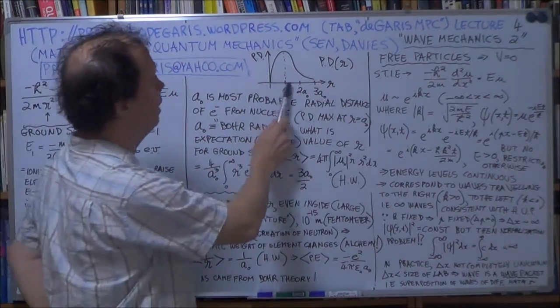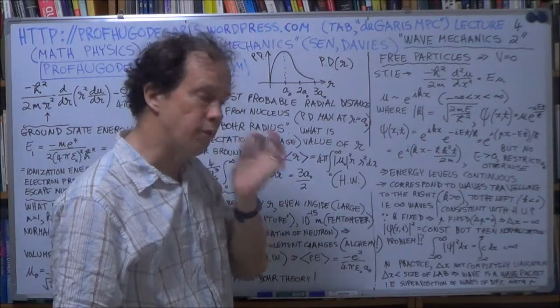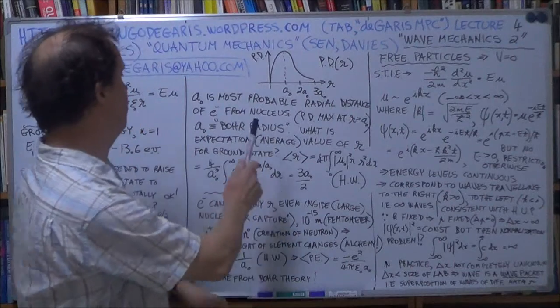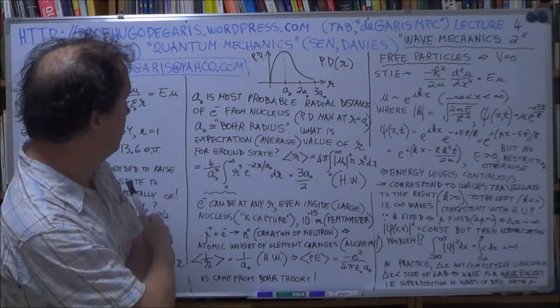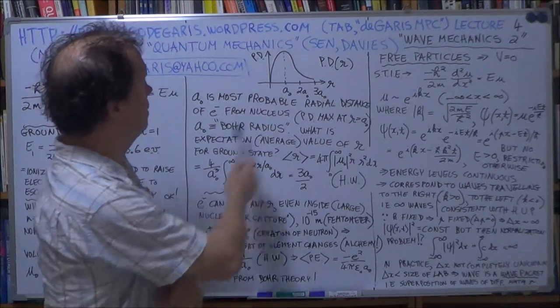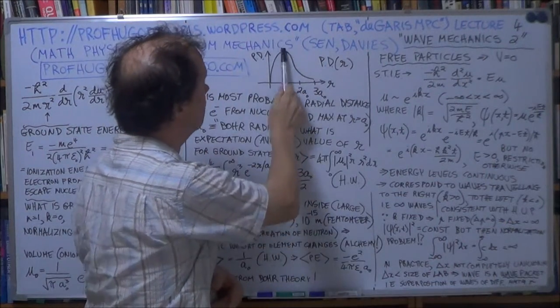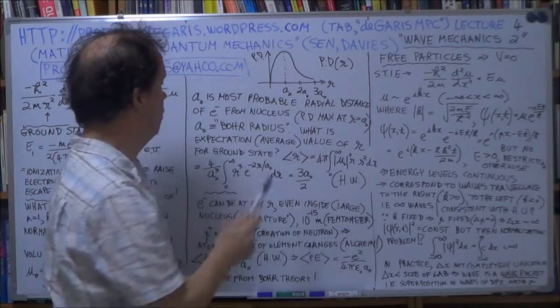Now that particular radius is usually called the Bohr, from Niels Bohr, B-O-H-R, usually called the Bohr radius. Now so that's the most probable, the electron is most probably at the distance a naught from the nucleus. That's how you interpret it.